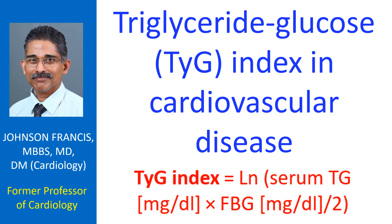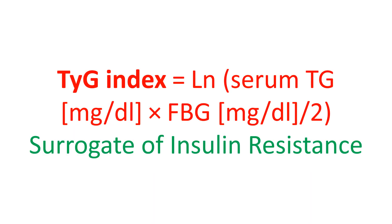Triglyceride glucose index, calculated from fasting triglycerides and glucose levels, was proposed as a surrogate of insulin resistance in 2008, as insulin assay was expensive and not available in most laboratories in cities of underdeveloped countries. The TyG index is calculated as follows: the product of serum triglyceride and fasting blood glucose values in mg per deciliter is divided by 2, and the natural logarithm of the result is obtained.